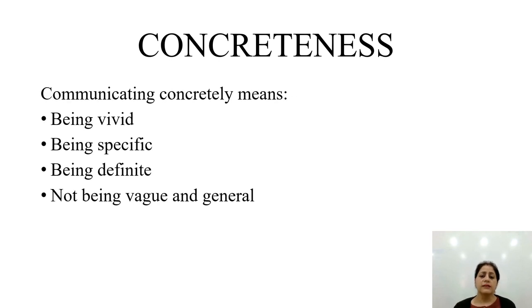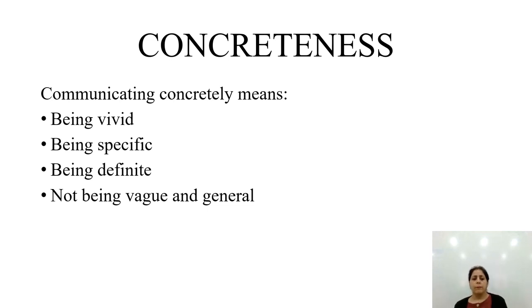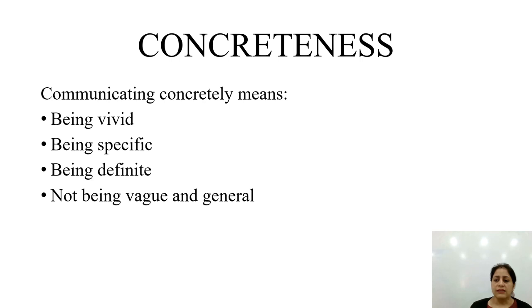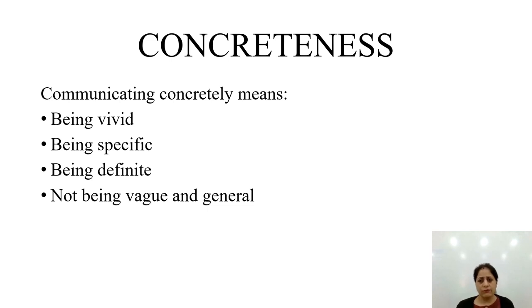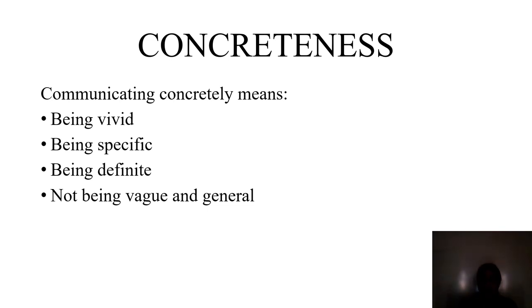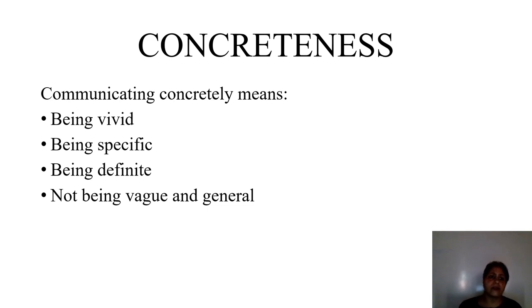The second C is concreteness. Communicating concretely means being vivid, specific, and definite — not being vague and general. You need to be specific and very much assertive in whatever you are conveying to the audience or to a single person. There is no need to be vague or general when trying to convey a message to another person.